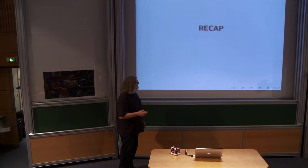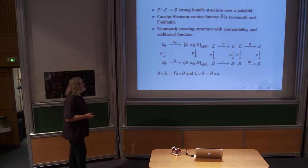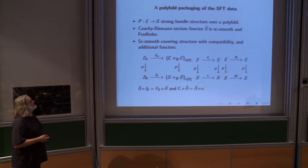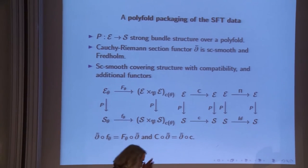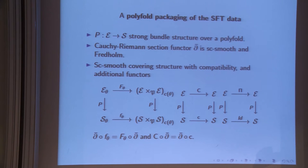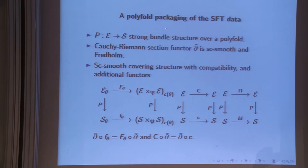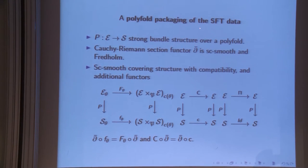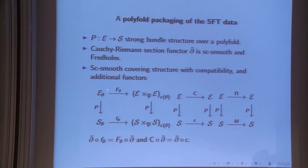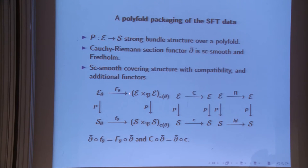The last lecture. In lectures one to three, we introduced the category of stable maps, a bundle category over it, and the Kocher-Riemann section functor. We described the algebraic relationships, put smooth structures on this, and the packaging is essentially that of the SFT when you want to resolve the transversality questions. So you have these diagrams of SC-smooth covering functors and relationships formalized by functors compatible with the Kocher-Riemann operator.